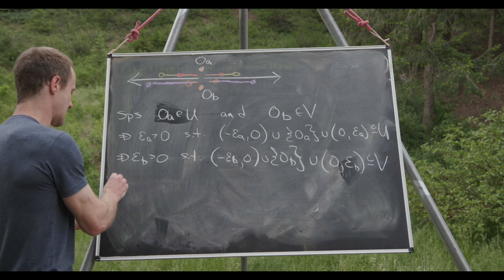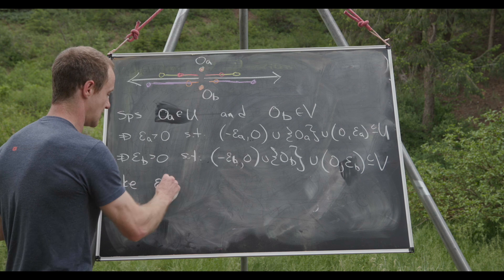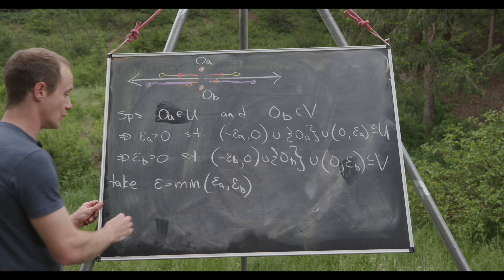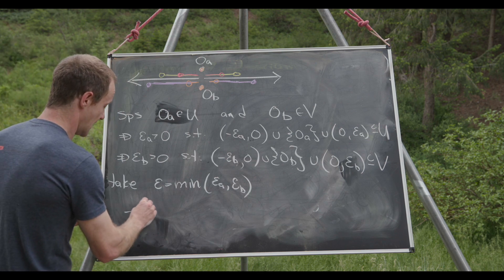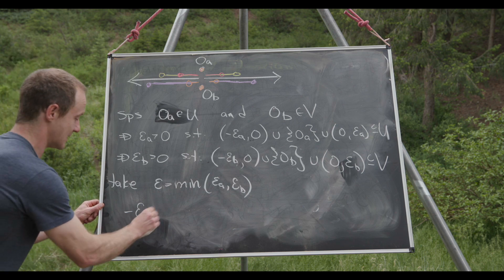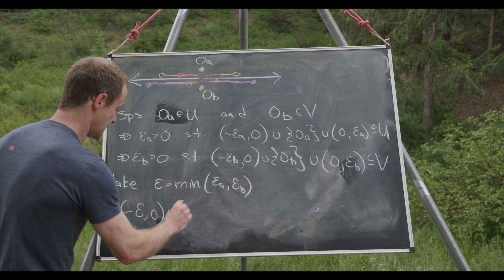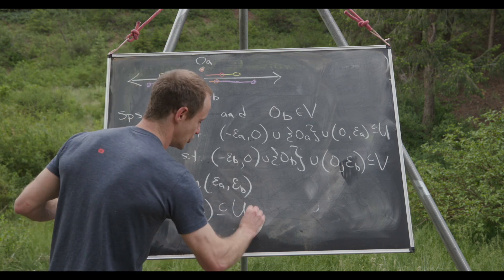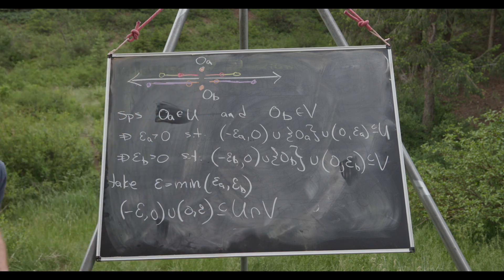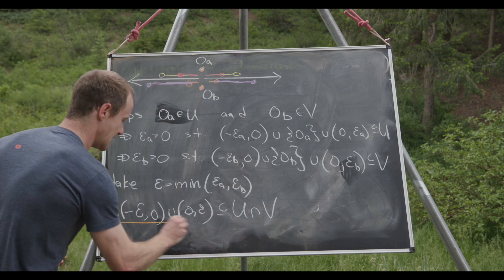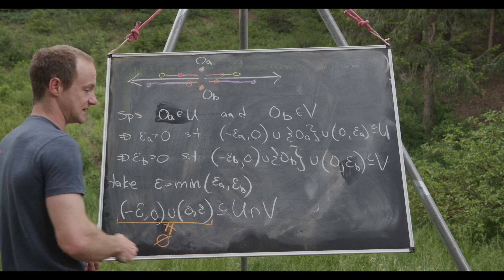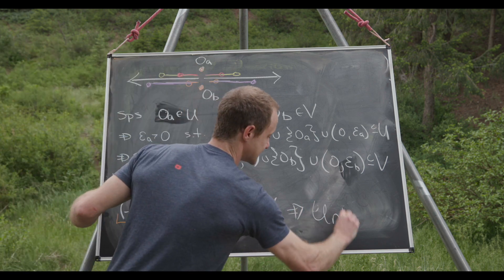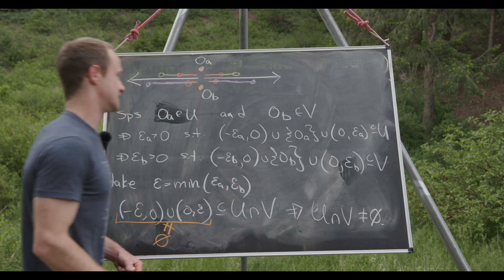Okay, next let's take just epsilon to be the minimum of epsilon_a and epsilon_b, and then we'll notice that this neighborhood or open set minus epsilon to zero union zero up to epsilon is going to be contained in U intersect V, which is a problem because this guy right here is most definitely not empty, which tells us that U intersect V is also not the empty set.